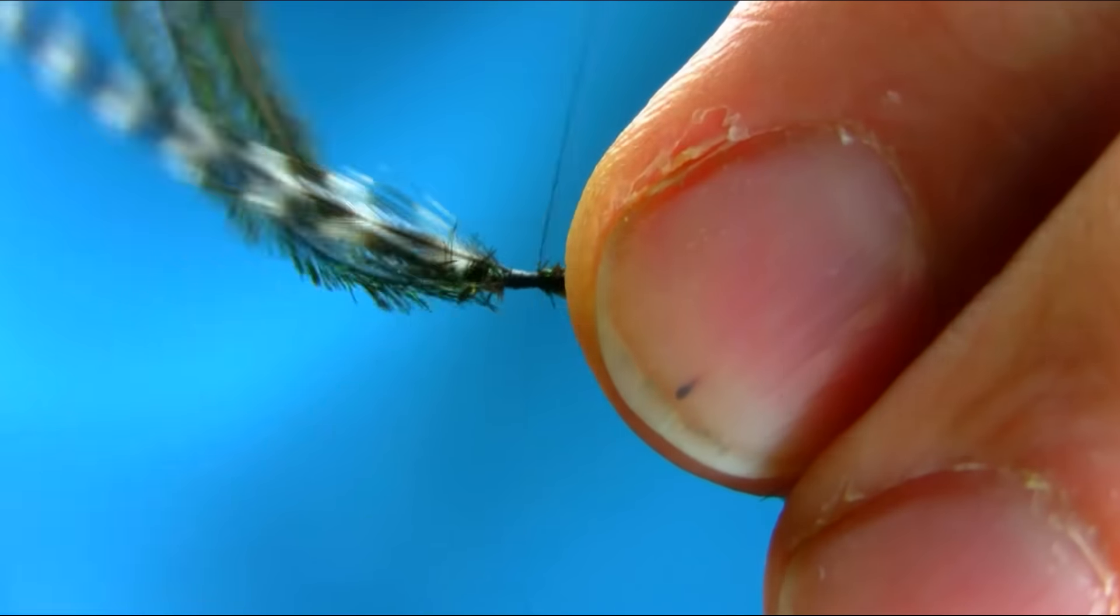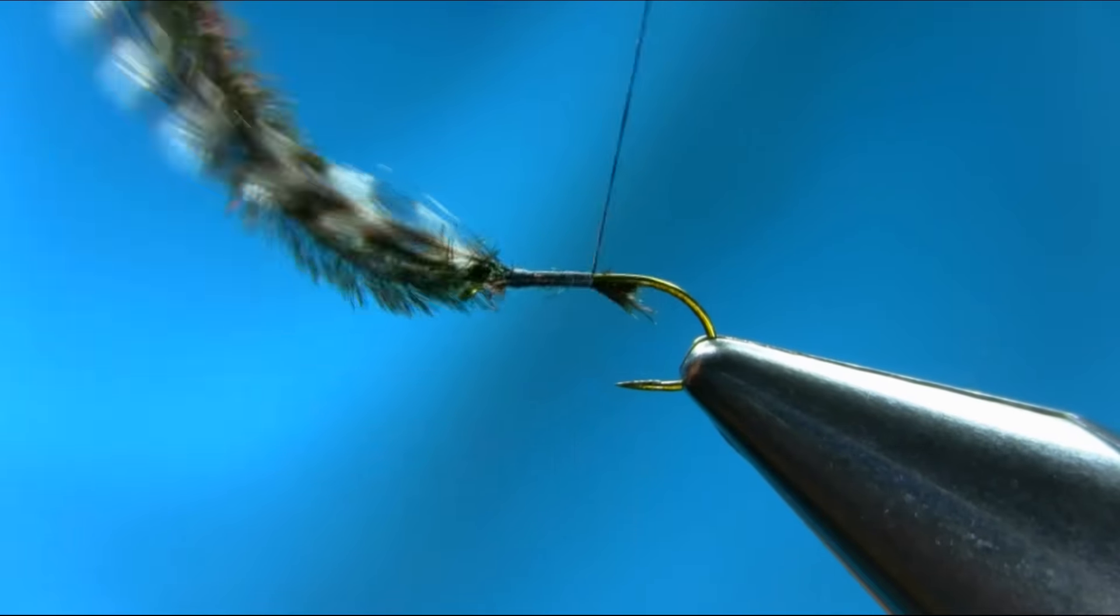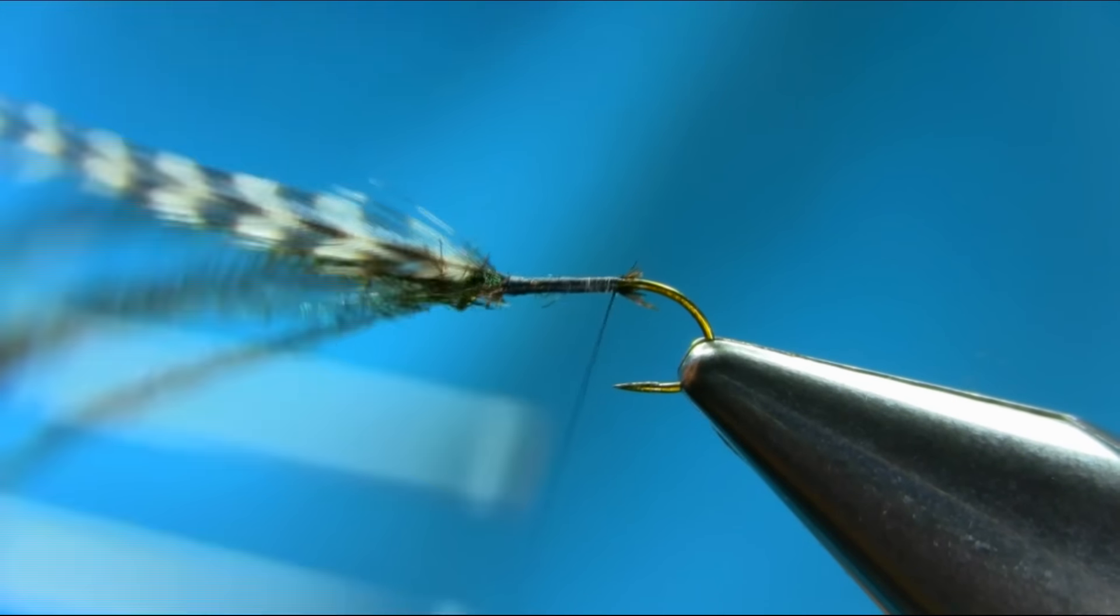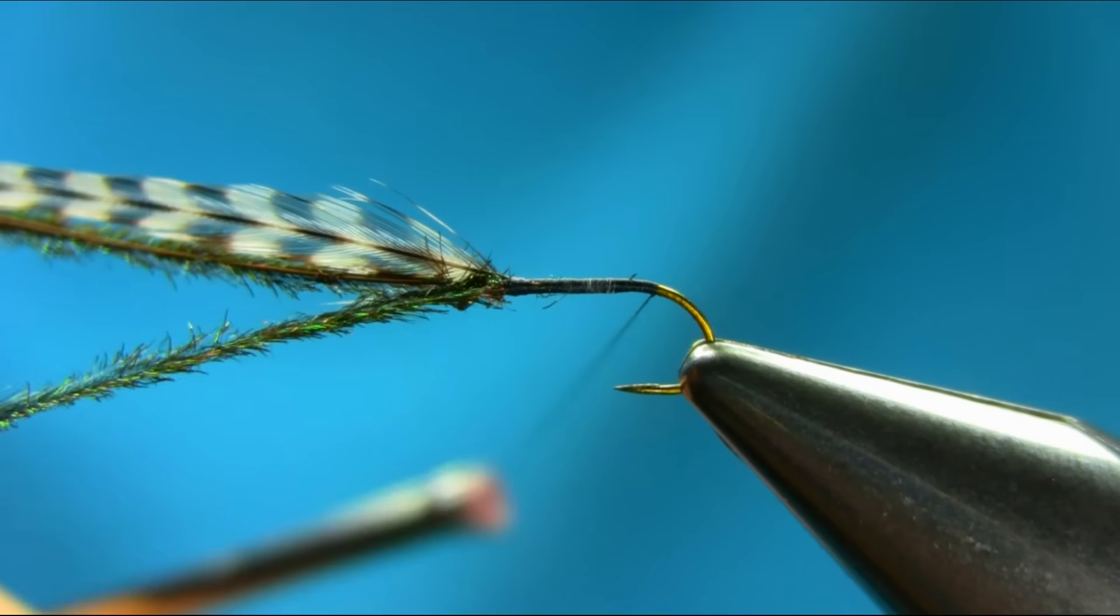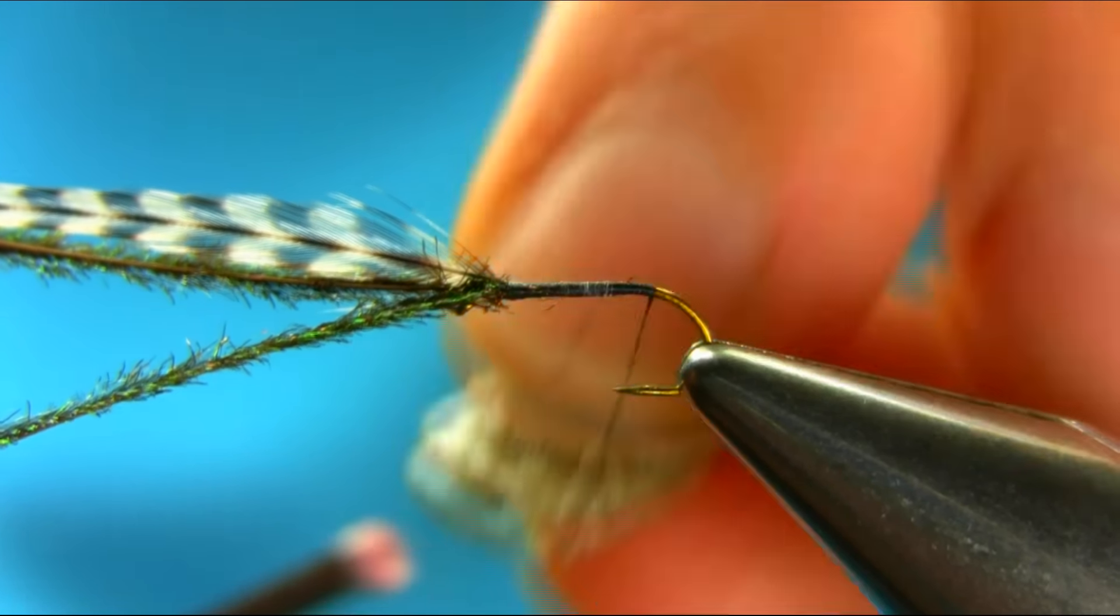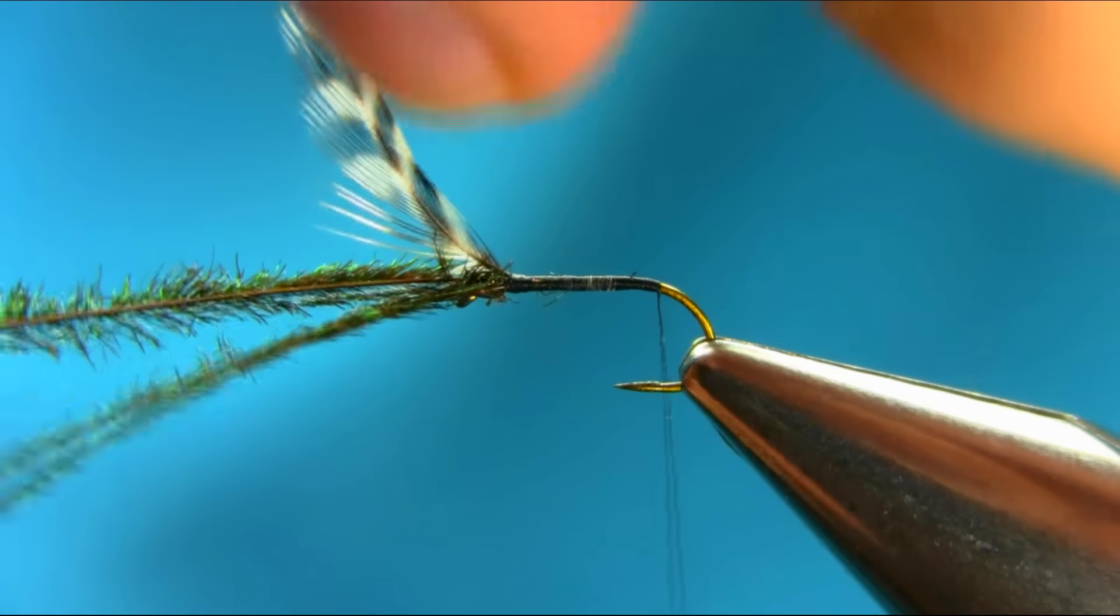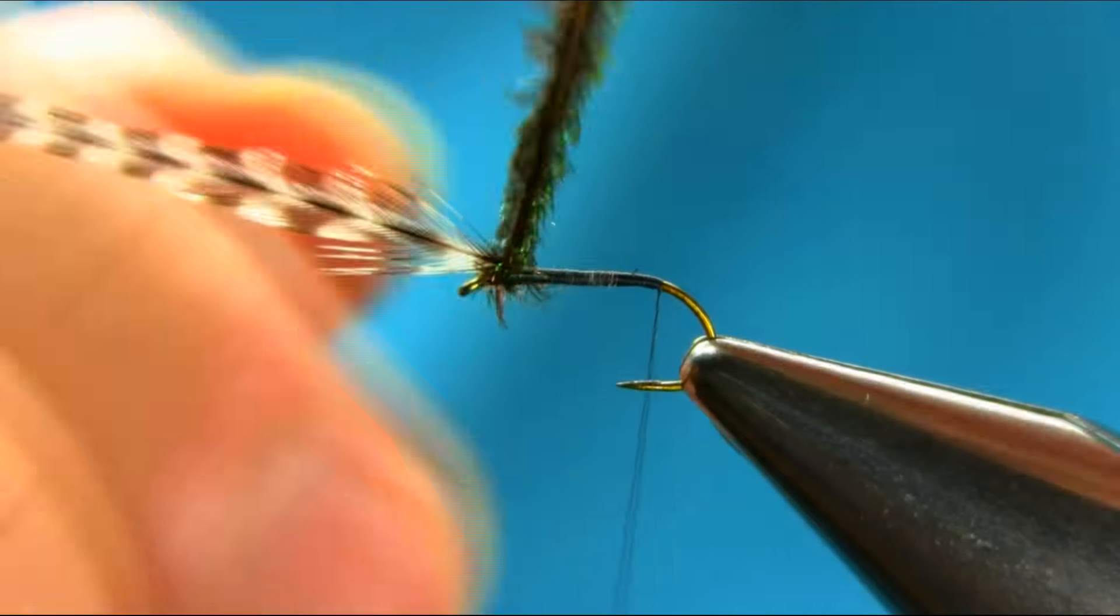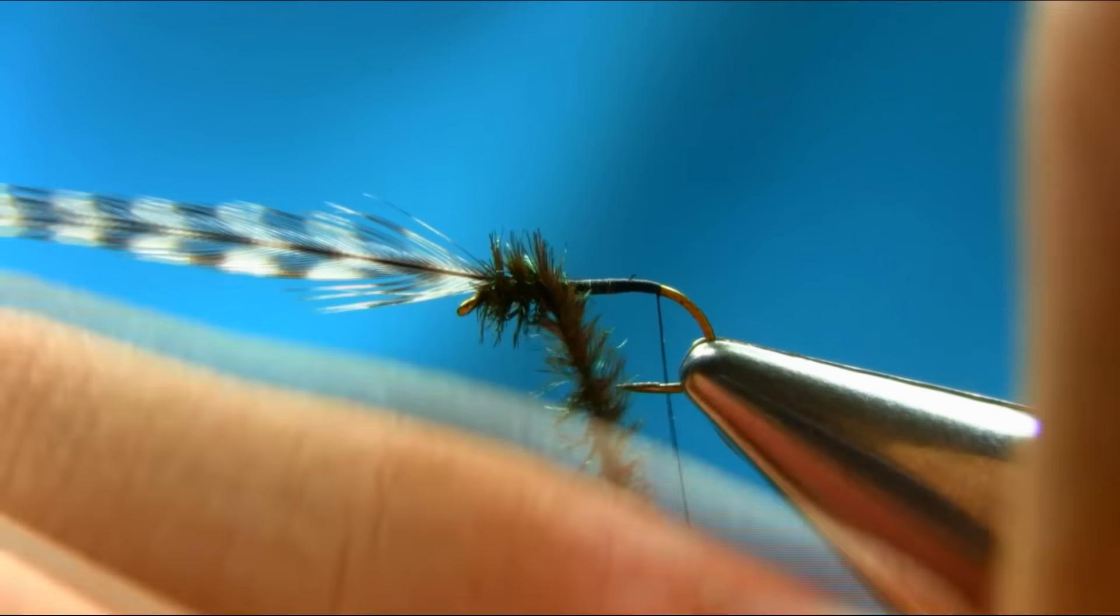And then go towards the bend and turn all the way. Now do hard wax in here because we're going to lock everything when we're coming back towards the eye. So bring your peacock first.